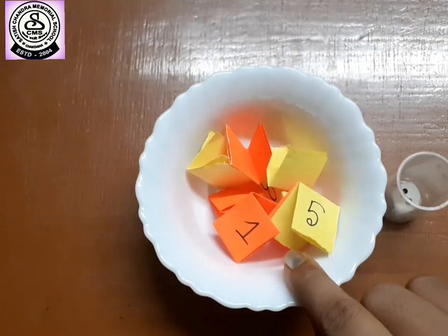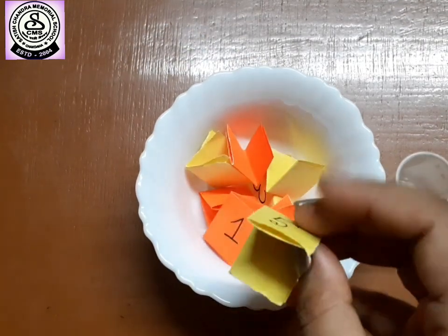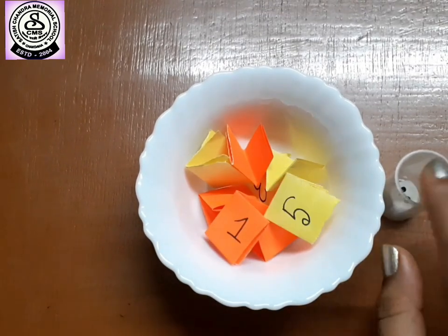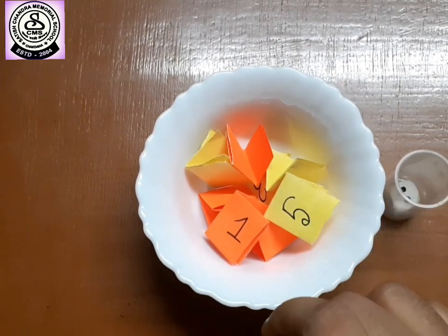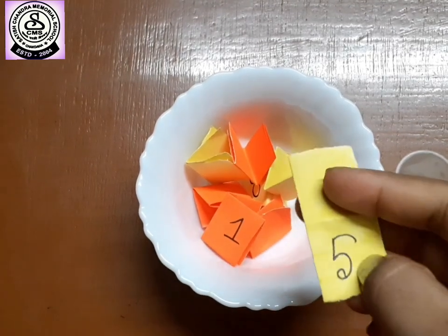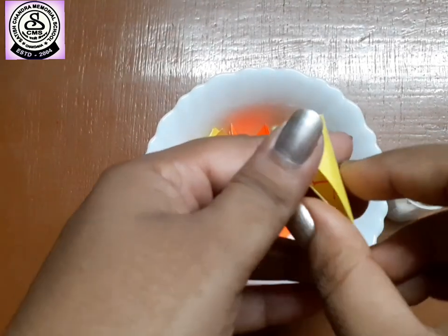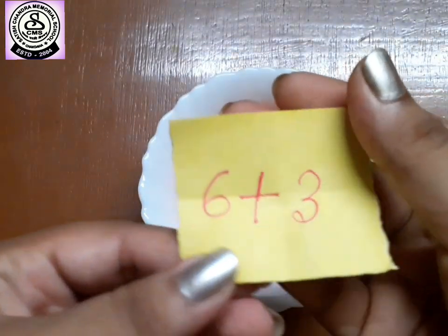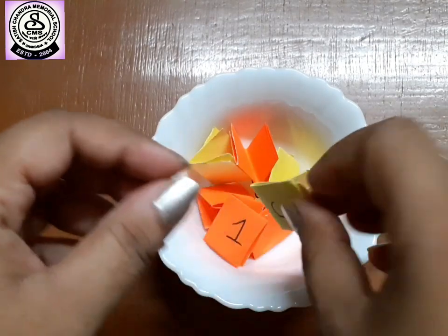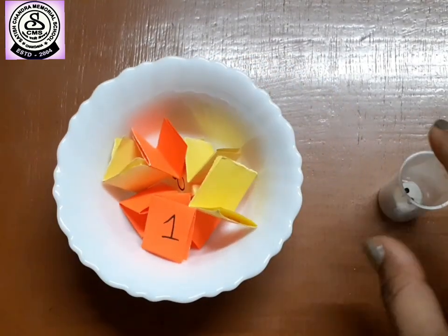And here in this bowl, I have some chips. They have some numbers here. I am going to roll this dice and find the number. Then I will take that chit. And inside the chit, I have written some addition problem. We have to solve and find out the answer. So, this is the game. Let's try it.